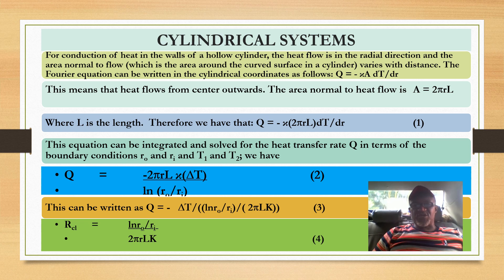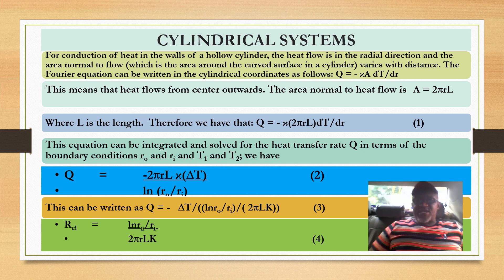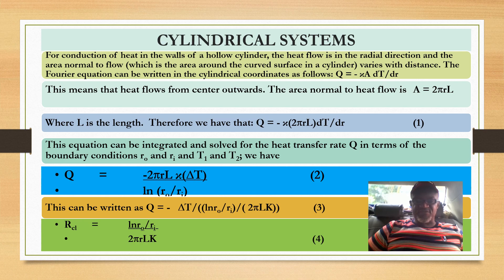When we integrate equation 1, we have equation 2: Q = -2πrL·k·ΔT / ln(r_o/r_i), where r_o is outer radius and r_i is internal radius. Remember there must be a thickness for the cylinder. This equation can be written as Q = ΔT / [ln(r_o/r_i)/(2πLk)]. This means the resistance for a cylinder is given by equation 4, R_t = ln(r_o/r_i)/(2πLk), just like we gave the resistance for a slab.